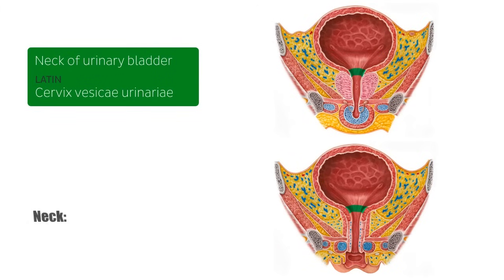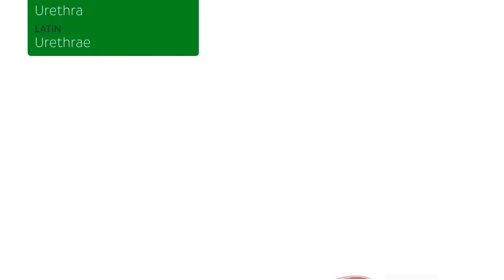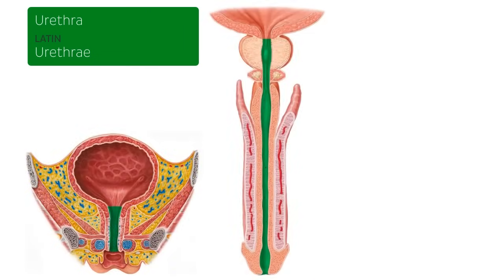The neck of the bladder is situated at the base of the trigone and is the most inferior aspect of the bladder. Inferiorly, the neck is continuous with the proximal urethra — a canal for the transportation of urine from the bladder to the external urethral orifice. Here we have a cross-section of the female bladder on the left and the male bladder and urethra cross-section on the right.